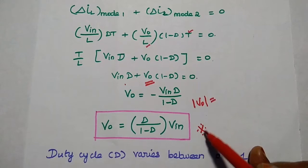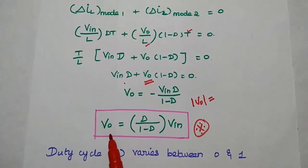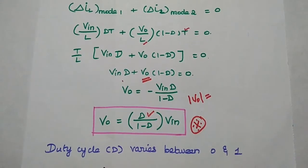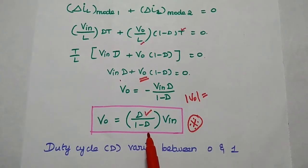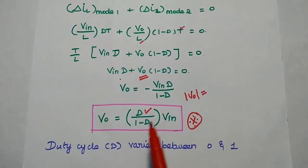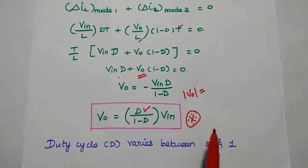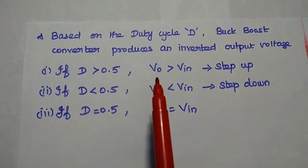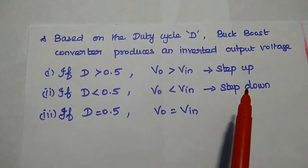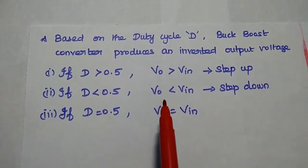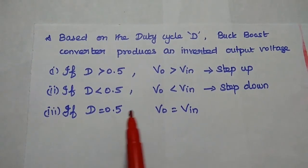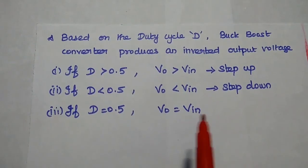This is the final answer. The output voltage V_O depends on the duty cycle, which varies between 0 and 1. Based on this value, it can act as a step-up or step-down converter. If D is greater than 0.5, the output voltage is greater than the input voltage — that is a step-up converter. If D is less than 0.5, the output voltage is less than V_in — that is a step-down converter. If D equals 0.5, then the output voltage equals the input voltage.